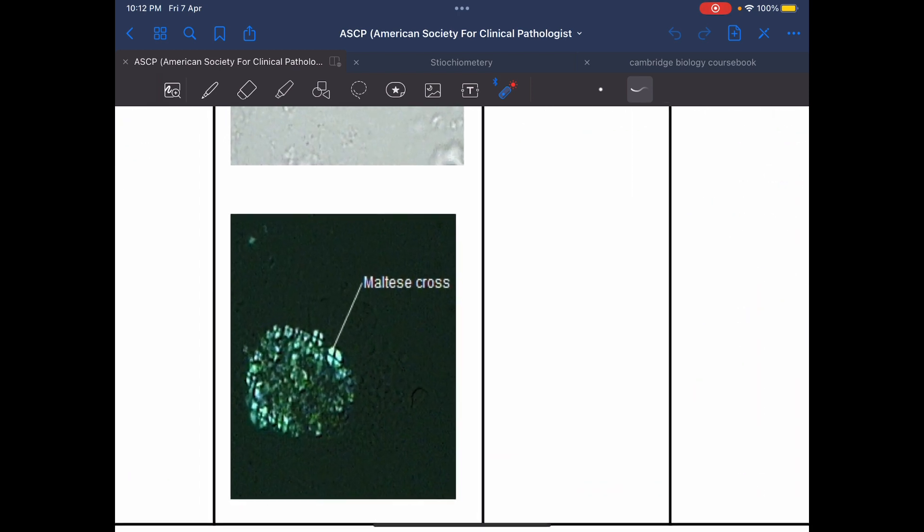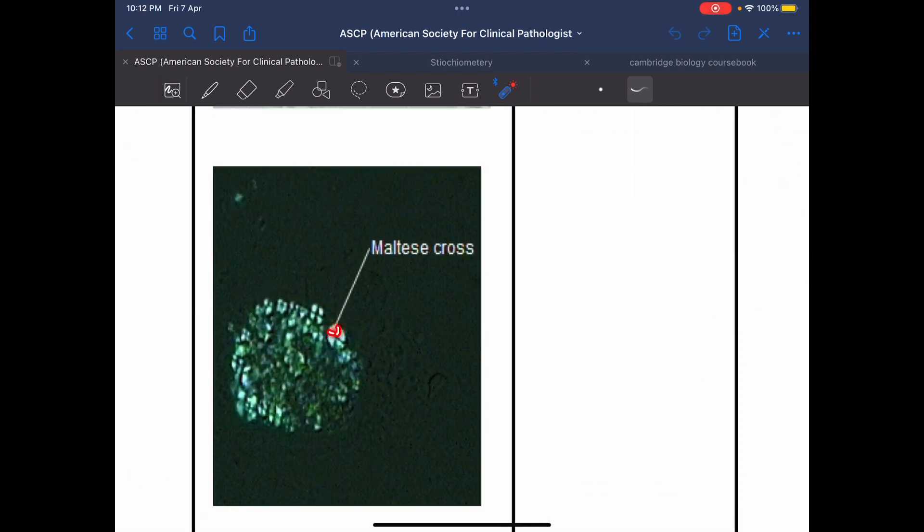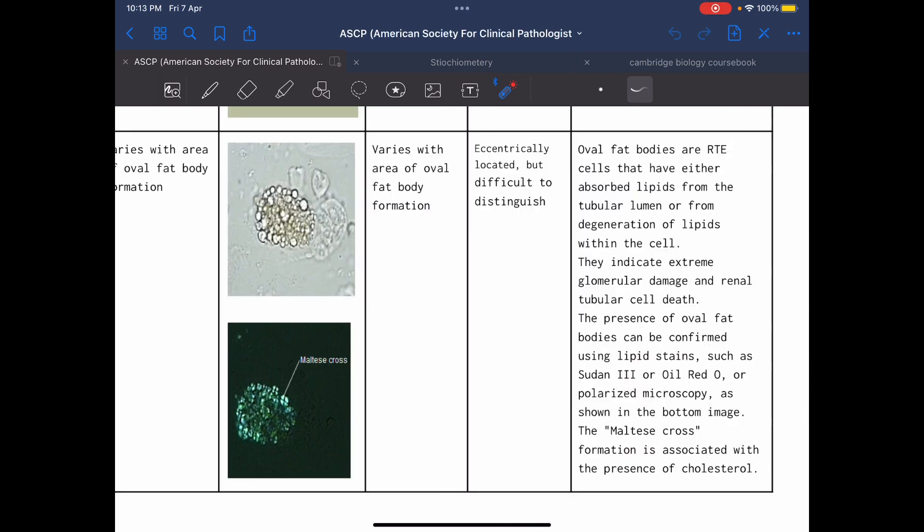As we see here, this with polarized microscope and shows here Maltese cross. Oval body showing Maltese cross using polarized microscope. The presence of oval fat bodies indicates extreme glomerular damage and renal tubular cell death. This can be confirmed as we mentioned with lipid stain, such as Sudan III or oil red, or using polarized microscope. Using polarized microscope will show Maltese cross. This means presence of cholesterol.